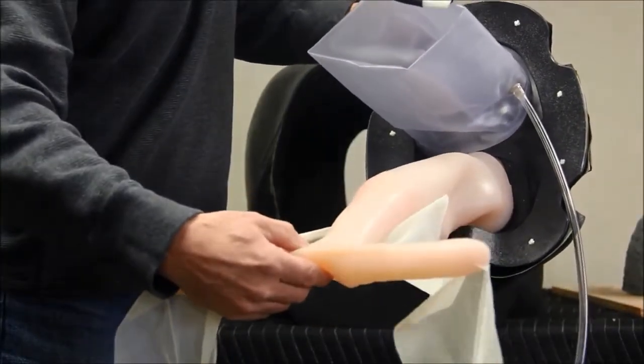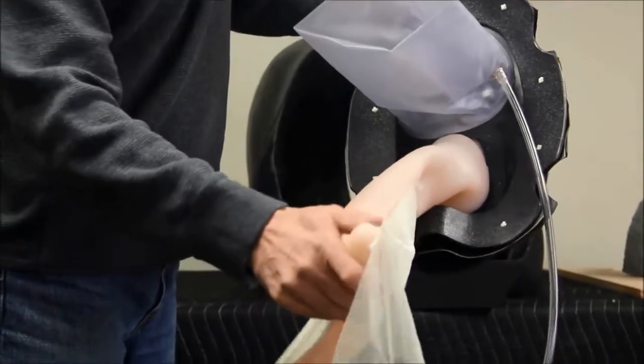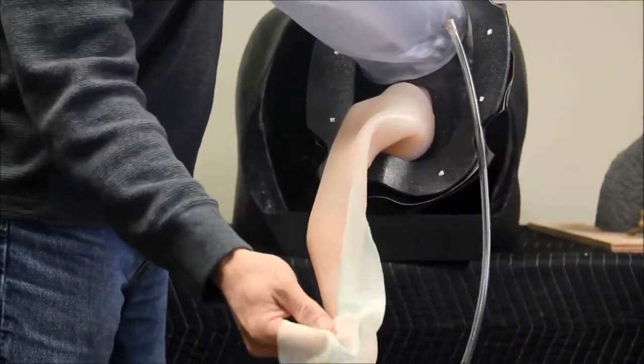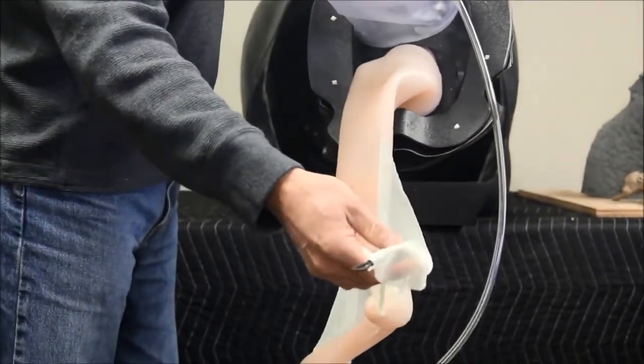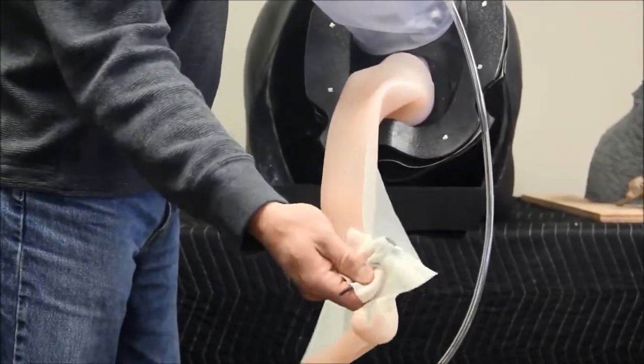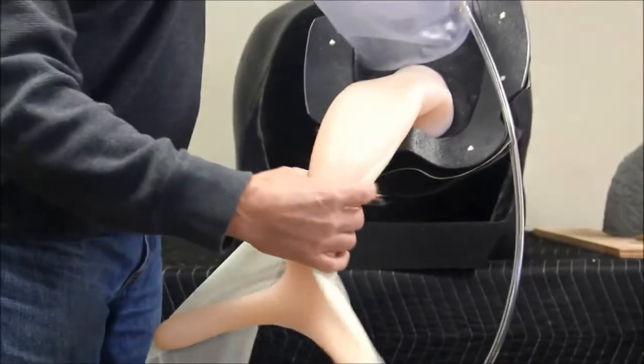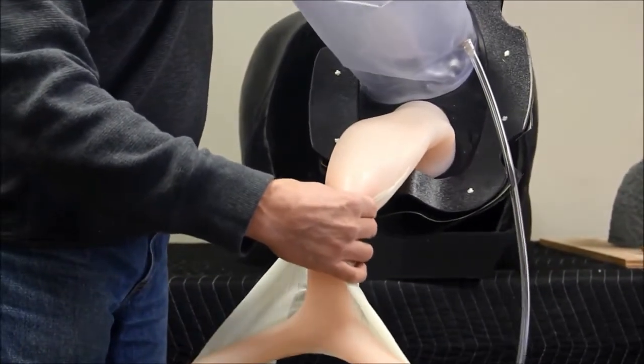Here is the Equine Uterus. The ovaries are attached using these small openings at the end of the uterine horns. The broad ligament is represented by the fabric and mounts to the body wall with the attached magnets. It also has a palpable cervix.